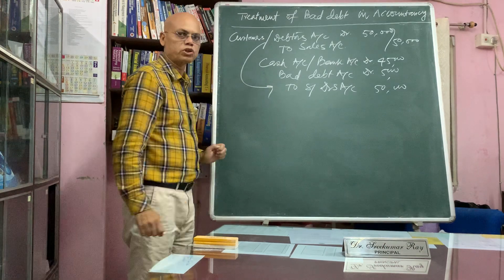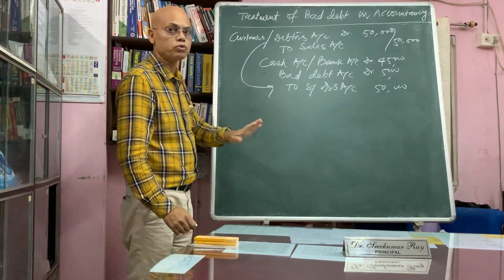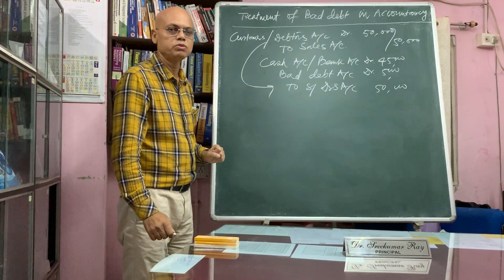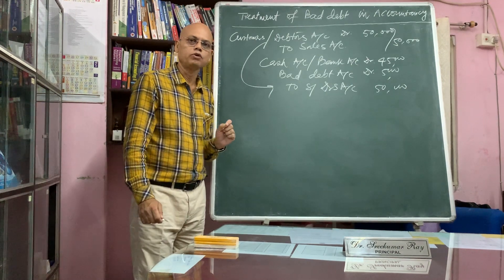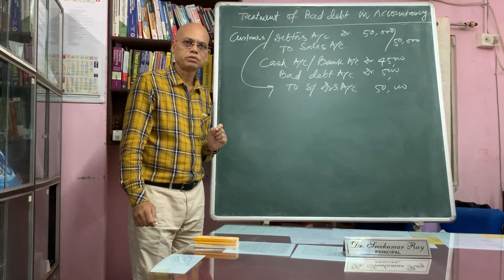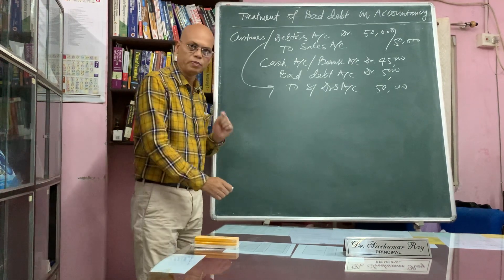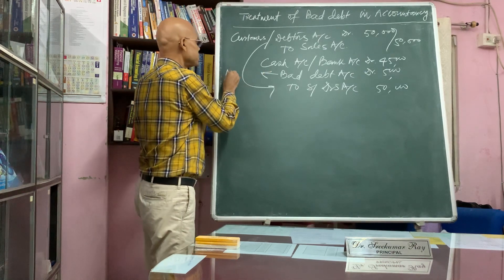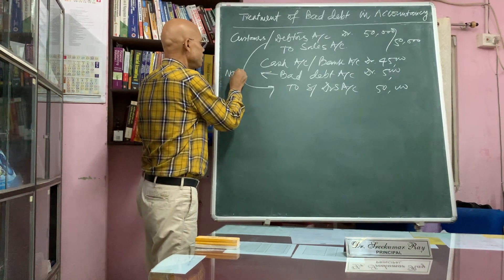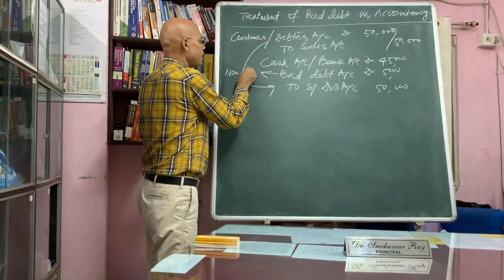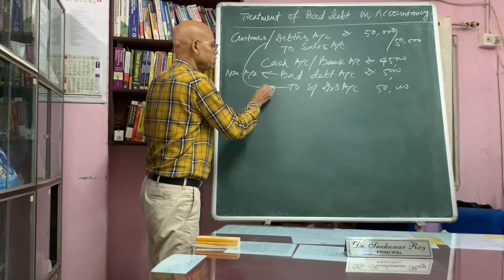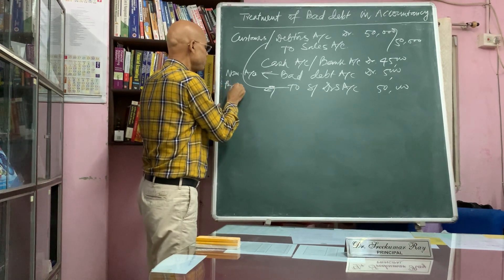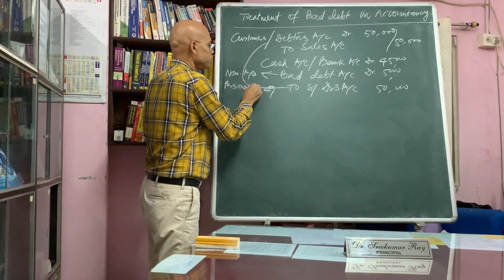Now the question is: how will the bad debt account be closed? Bad debt is a nominal account and it should be closed. The debtors account is a personal account.